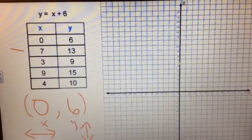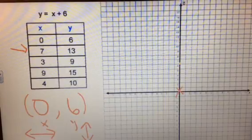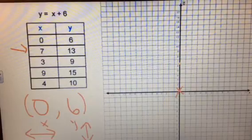Our next coordinate point will be 7, 13. So again, starting at the 0, 0, so this spot right here, we move over 7 to the right and up 13 to put our spot right there.